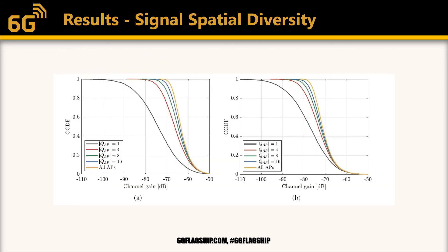Here, we again plot the CDF of the channel gains of the active device for the typical case on the left and for the worst case on the right. We compare the performance for the cases where only the closest access point is utilized to decode the signal, and when 4, 8, or 16 closest access points are utilized, and also the case where all the access points are utilized to decode the signal.